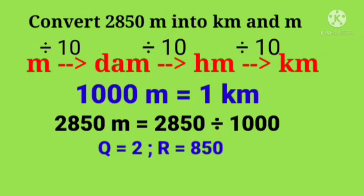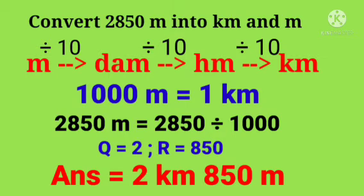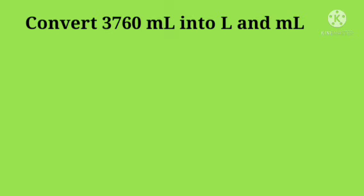We will write the quotient in kilometers and remainder in meter. 2 kilometer, 850 meters.